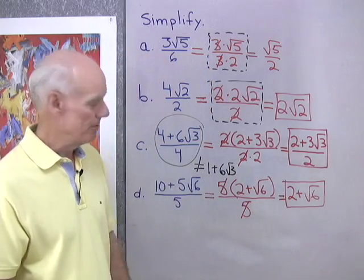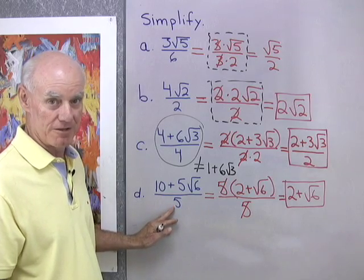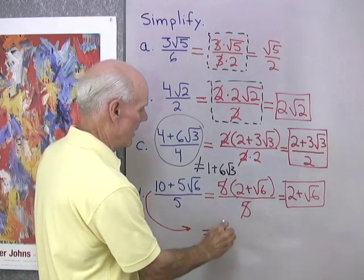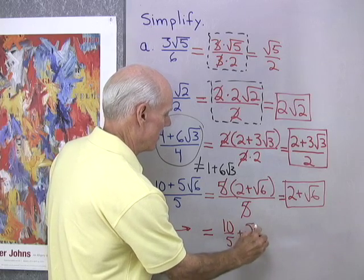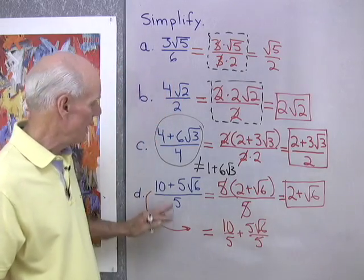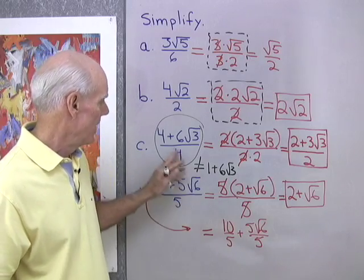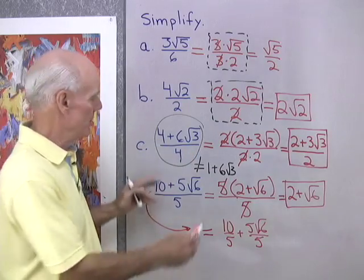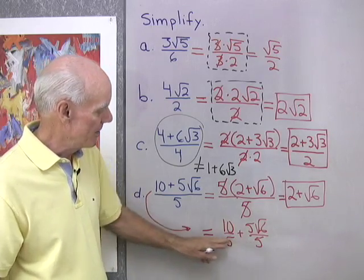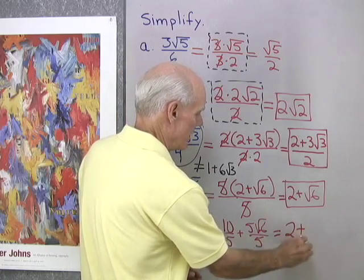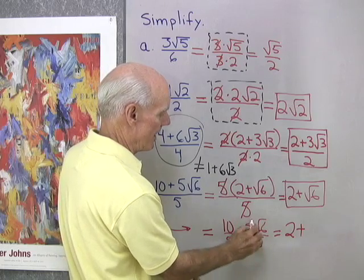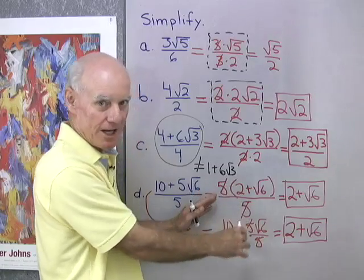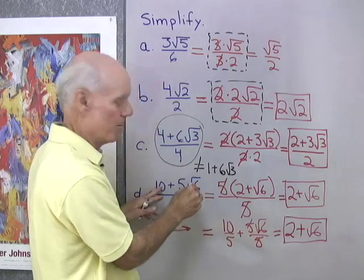I would show this step right here. You might say you'd rather do this by division — that's okay. This can also be a division problem where you say this is going to be 10 divided by 5 and also 5 square root 6 divided by 5. As long as you divide both terms in the numerator by that 5, you're going to be okay. Up here, the common mistake is dividing only one term by 4 and not the other — that long fraction bar means both terms are divided by 4. So, 10 divided by 5 is 2, and 5 square root 6 divided by 5 gives square root 6. You get the same answer whether you factor the numerator and divide out common factors, or treat it as a division problem where you divide both terms by 5.